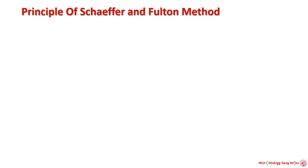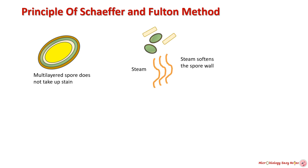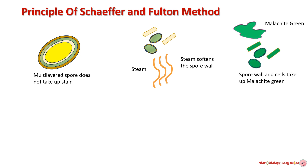The principle behind the Sheffer-Fulton method: bacterial spore is a highly resistant, impermeable, and multi-layered structure, therefore it is difficult for normal stains to penetrate and stain the spore wall. In the Sheffer-Fulton method, steam heat is applied to make the spore wall softer and permeable for malachite green stain. The stain penetrates the endospore and becomes trapped in it. Heating acts as a mordant to facilitate the uptake of the stain.